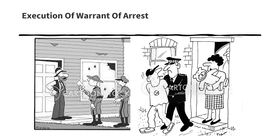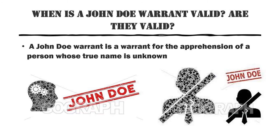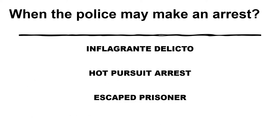Police officers may effect arrest without the warrant in their possession at the time of the arrest. A John Doe warrant is a warrant for the apprehension of a person whose true name is unknown. Generally, this kind of warrant is void because it violates the constitutional provision which requires that a warrant of arrest should particularly describe the person to be arrested. But if there is sufficient description to identify the person to be arrested, the warrant is valid.